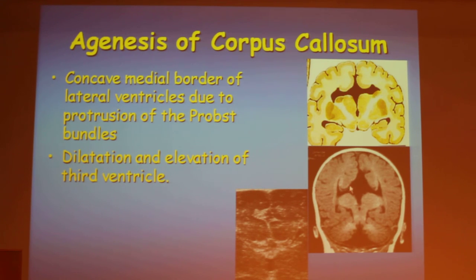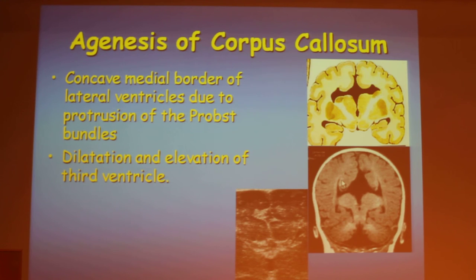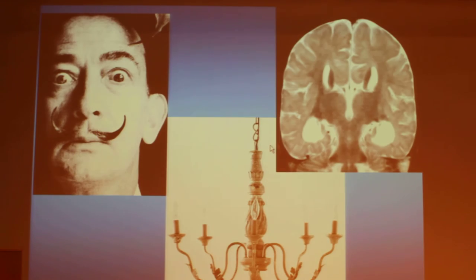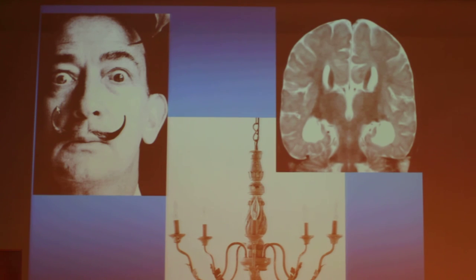This is caused by the bundle of Probst fibers that cannot cross from one side to the other, and the bundle of Probst fibers that swirl in front of where the corpus callosum would be — they are stuck in the middle and push the frontal horns laterally. This is called the Dali moustache or chandelier sign.